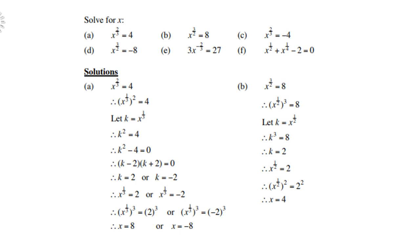Let's look at more examples. A: x to the power of two-thirds equals four. Rewrite it as x to the power of one-third, all to the power of two. Use the k-method: let k equal x to the power of one-third. Then k squared equals four, so k squared minus four equals zero. Factorizing the difference of squares gives k equals two or k equals negative two. Reintroduce k: x to the power of one-third equals two, raised to the power of three gives x equals eight. For k equals negative two, since three is odd, we can accept it: negative two cubed gives x equals negative eight.